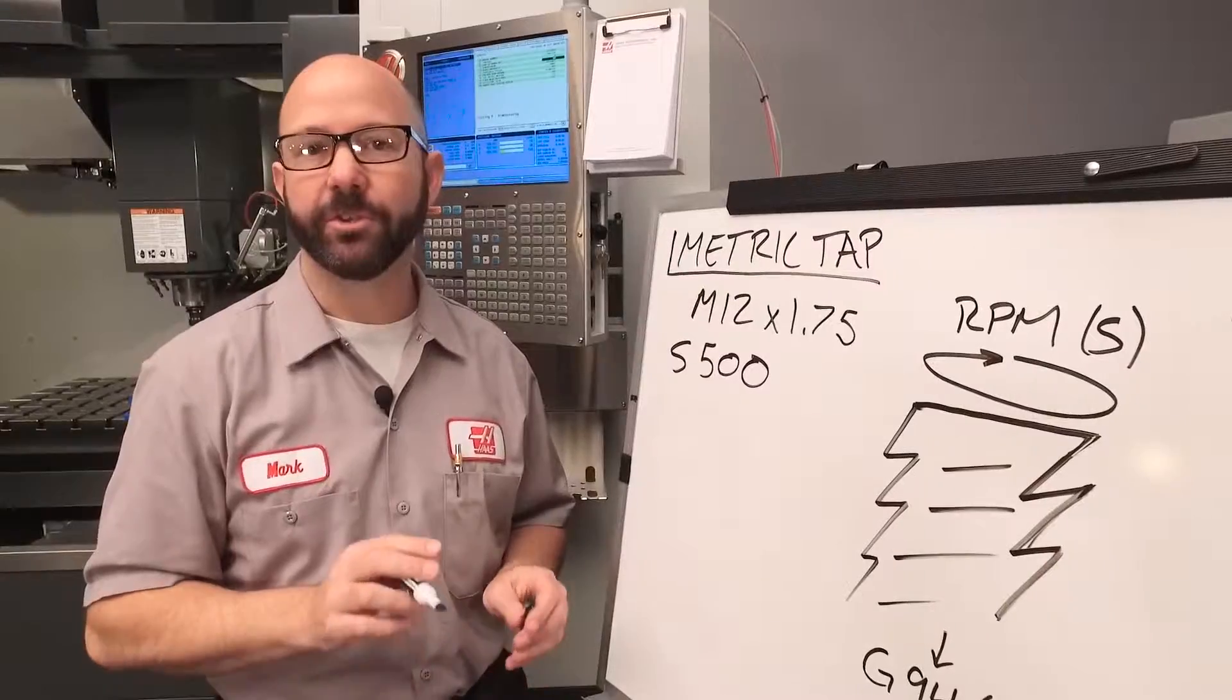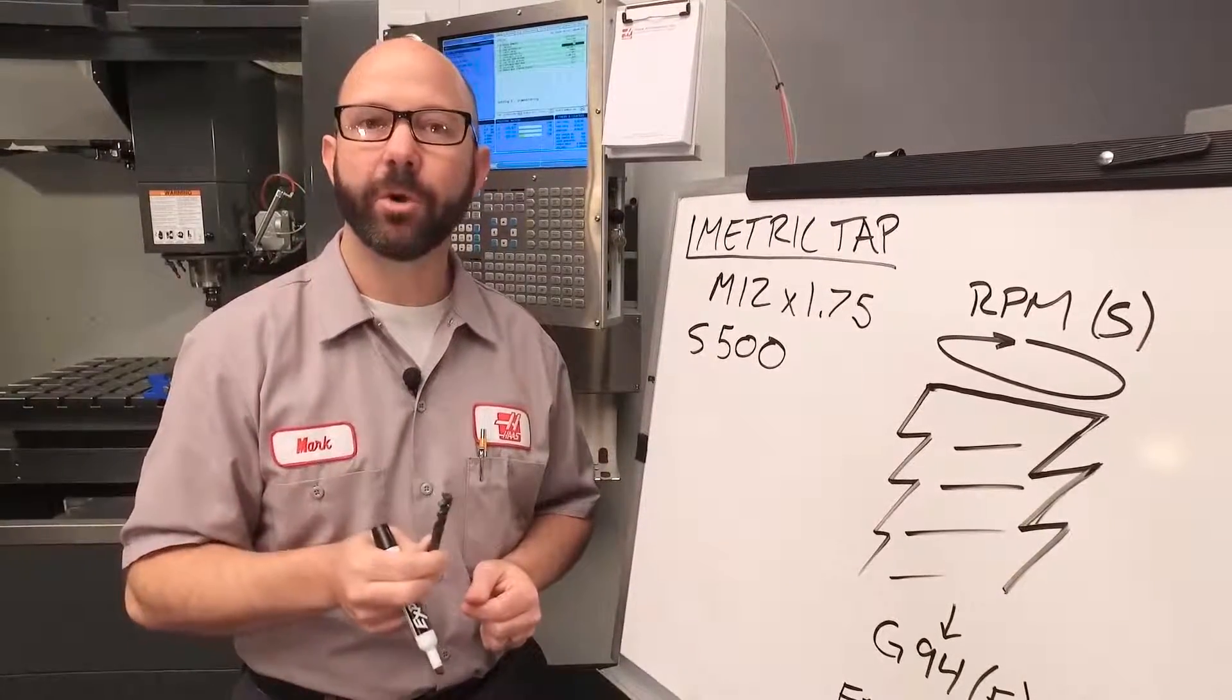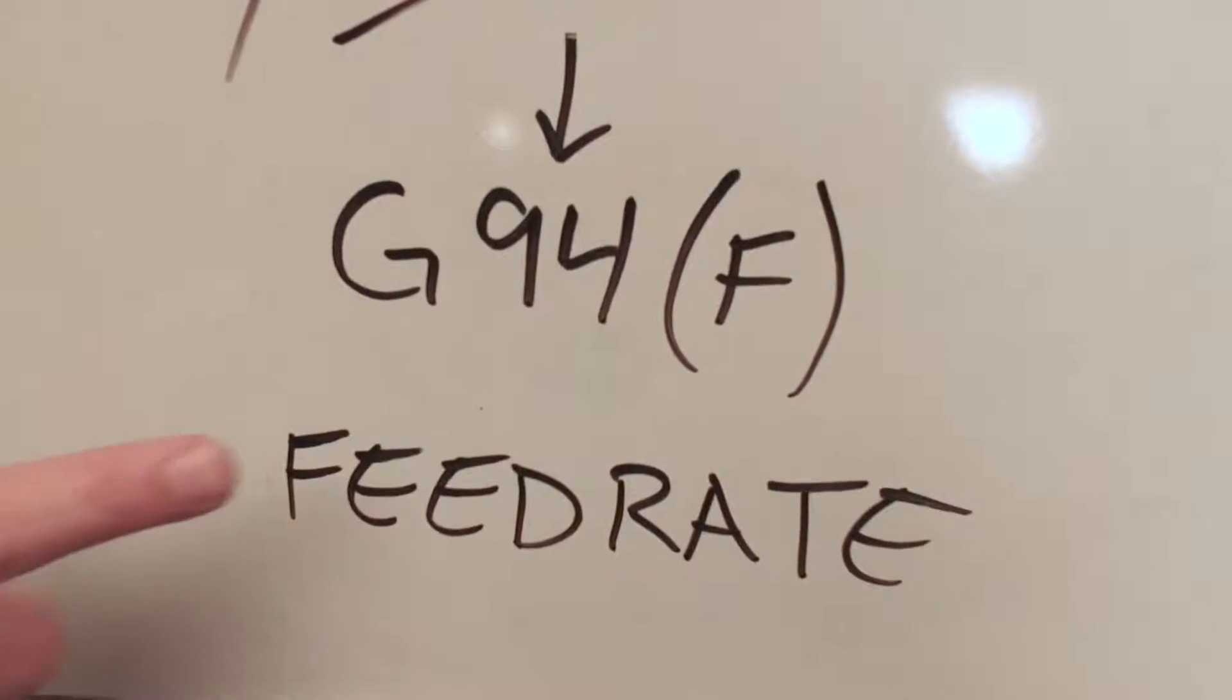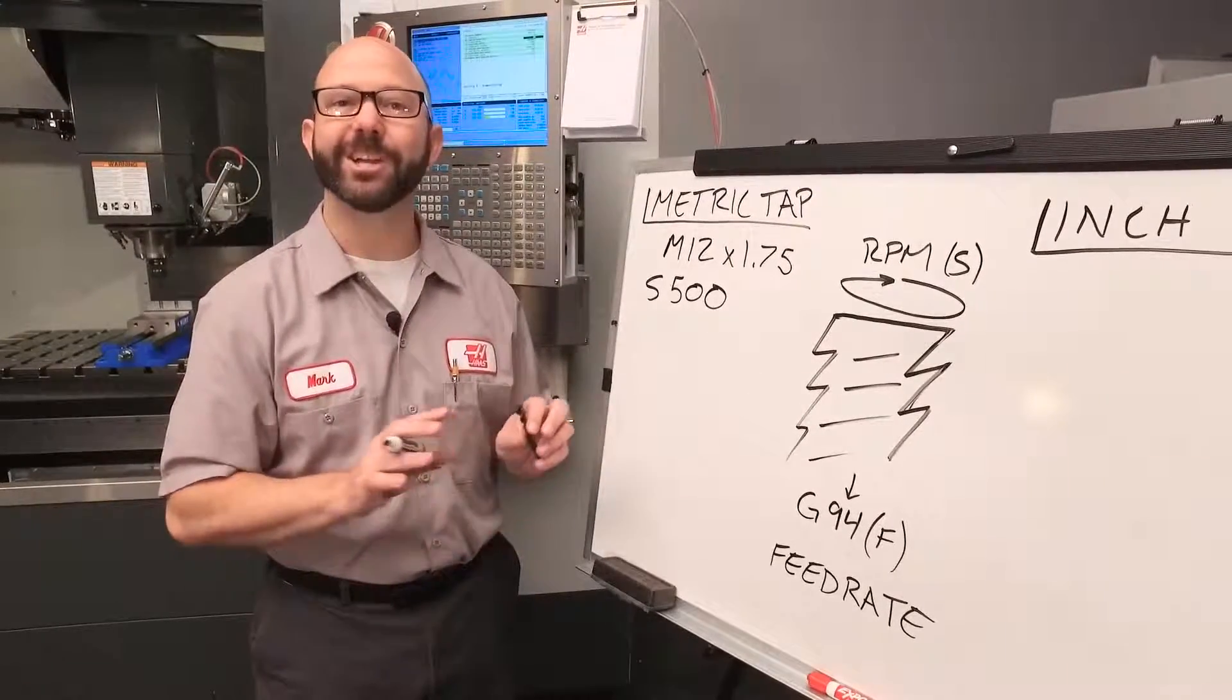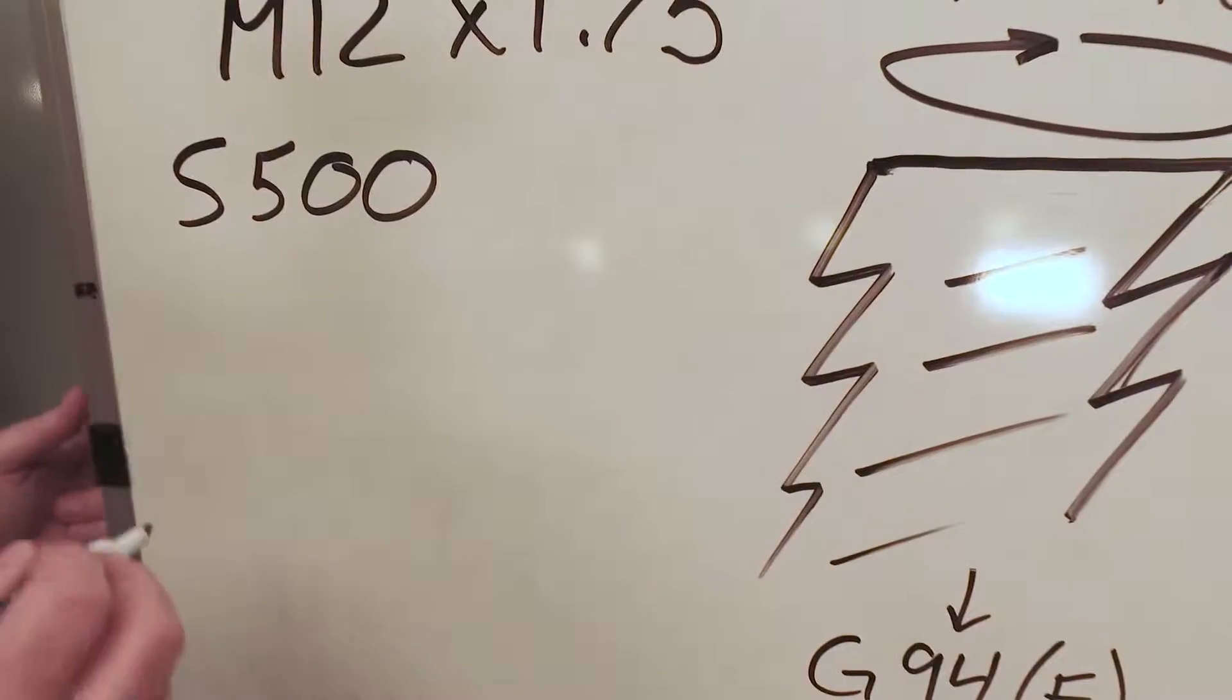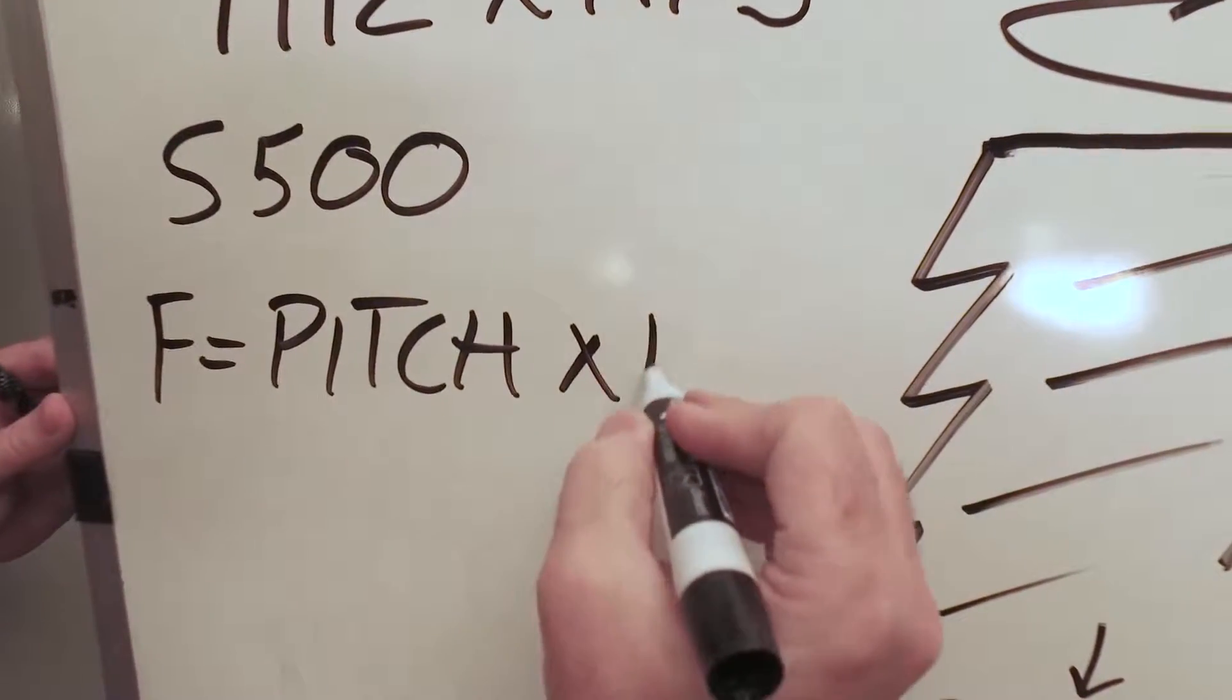Now for your real tap, you need to contact your tap supplier to find out what speed they recommend based on your tap style, the coating on your tap, and the material being cut. Now the second piece to our puzzle is our feed rate, our F value. For this, we need to put on our thinking caps. It's not too hard because we've got a formula. For a metric tap on a machine in metric mode, F equals pitch times RPM.